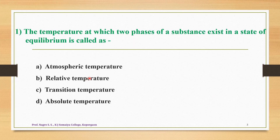The first question is: the temperature at which two phases of a substance exist in a state of equilibrium is called as — option A is atmospheric temperature, option B is relative temperature, option C is transition temperature, and option D is absolute temperature. The correct answer is option C — this temperature is called the transition temperature.